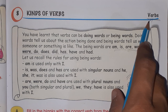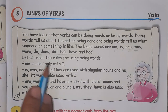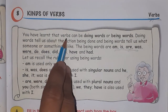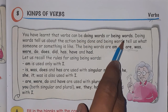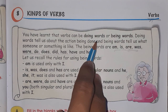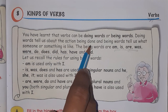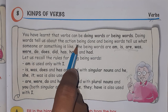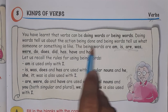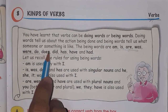Verbs — we call them 'kriya'. All action words and doing words are called verbs. Verbs can be doing words or being words. Doing words tell us about the action being done: sleeping, eating, drinking, reading, writing — these are verbs. Being words tell us what someone or something is like.